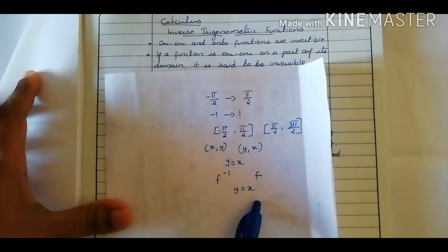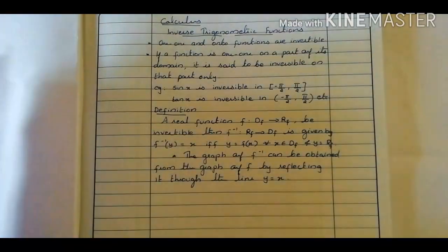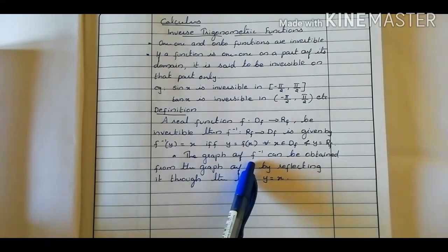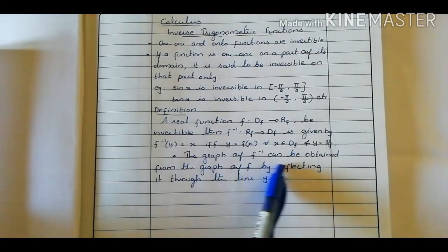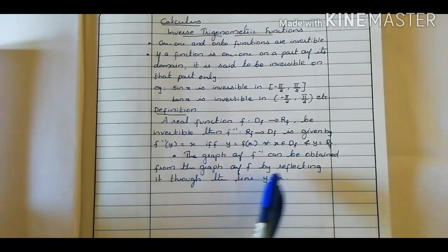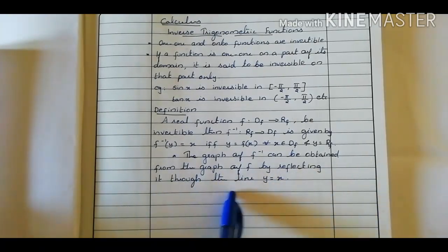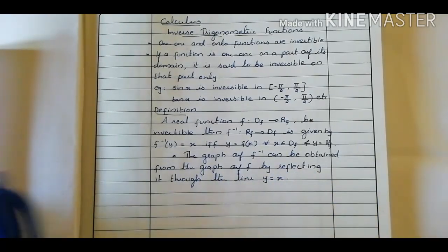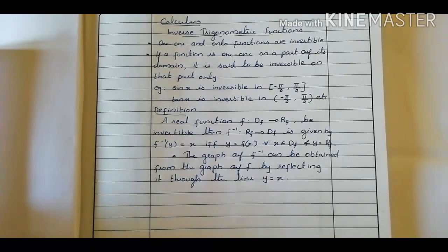We know from earlier classes that ordered pair (y, x) is the reflection of the point ordered pair (x, y) through the line y equals x. So simply, all the points on the graph of function f inverse are the reflections of each point on the graph of function f through the line y equals x. This means the graph of f inverse can be obtained from the graph of f by reflecting it through the line y equals x. By going through the graphs of sin x, cos x, and all trigonometry functions, you can easily understand this.